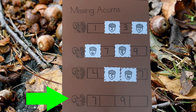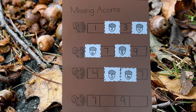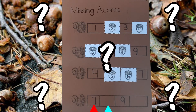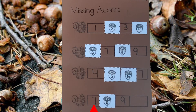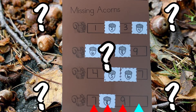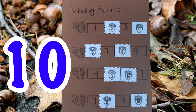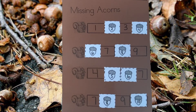So let's help the fourth squirrel find his acorn. The first number is 7. What comes after 7? It's the number 8. 7, 8, 9. What comes after 9? It's the number 10. So let's count the number: 7, 8, 9, 10.